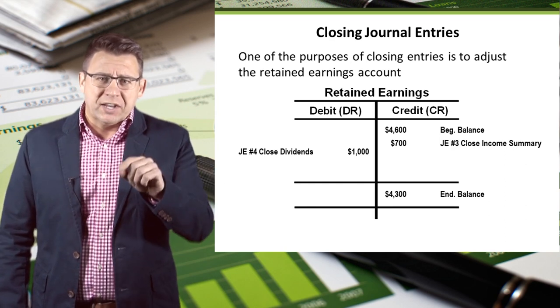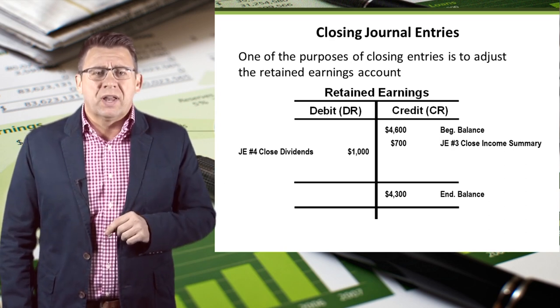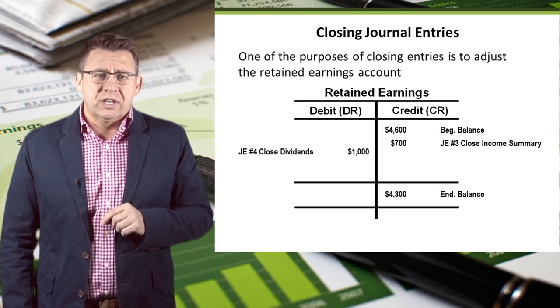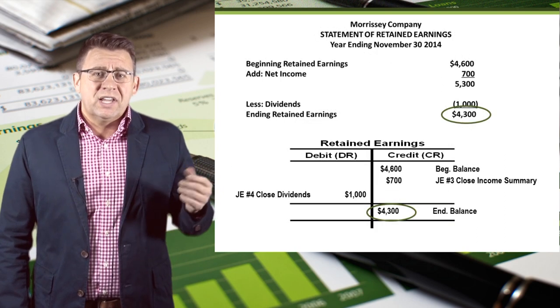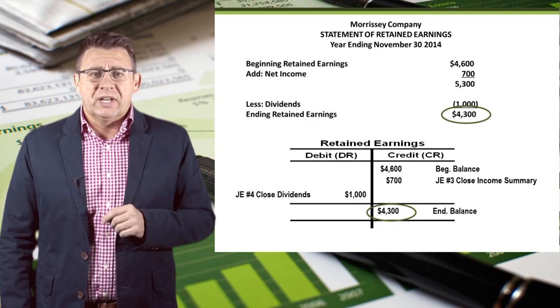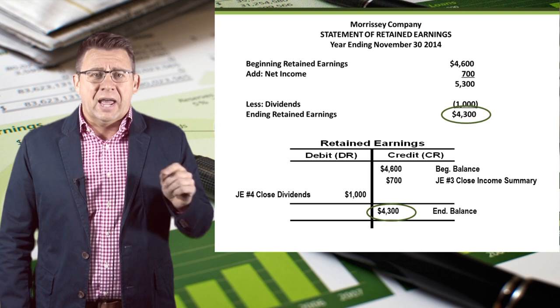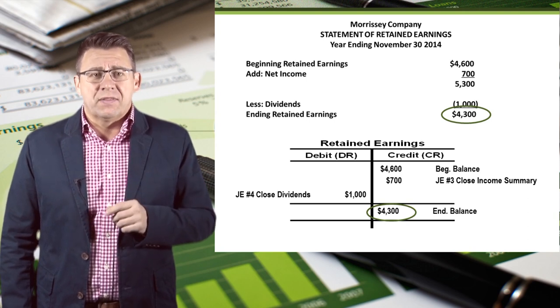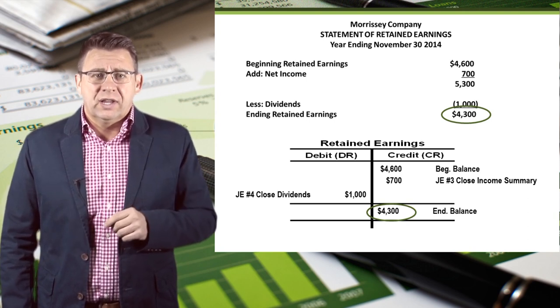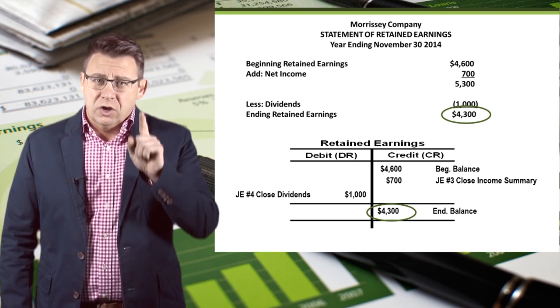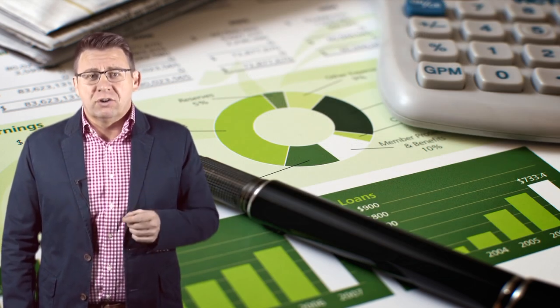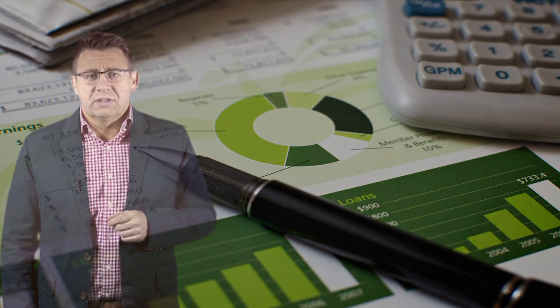Let's compare that to what we reported on the statement of retained earnings. You can see that the ledger for retained earnings now matches what was reported on the statement of retained earnings — it's like magic, only real. And that concludes this important video on closing journal entries.